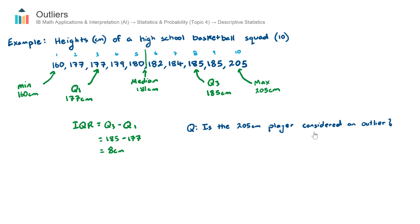Okay so is the 205 centimeter player considered an outlier? The test is, for a large data value, the test is the upper quartile plus 1.5 multiplied by the interquartile range.